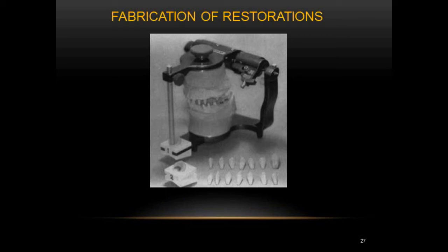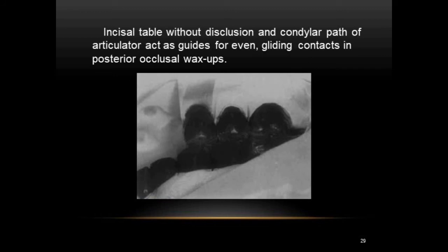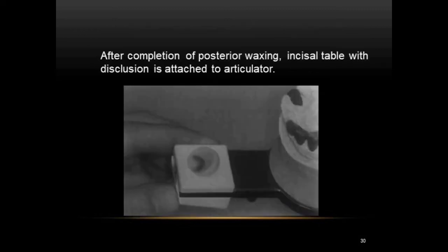After tooth preparation is completed, the upper and lower master casts are mounted onto the articulator using face bow and centric relation records. The maxillary cast anterior segment is removed — as before — to prevent anterior guidance acting as an obstacle during occlusal morphology of the posterior teeth. Once this is done, the posterior wax-up is completed, with the condylar path and disclusion acting as a guide for even gliding contacts. Then the incisal table with disclusion is placed and the anterior segment repositioned.